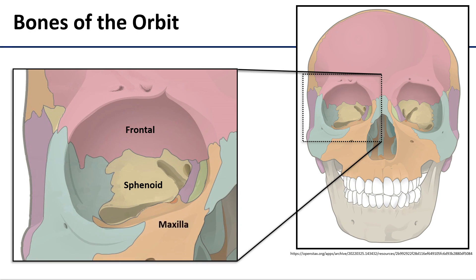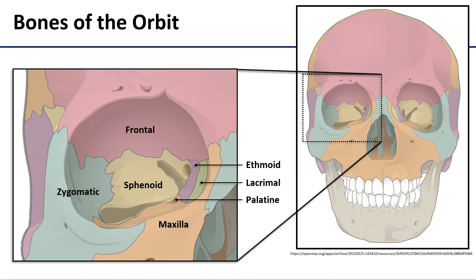The medial wall is formed primarily by the maxilla, but also gets contributions from the lacrimal bone, the ethmoid bone, and a teeny tiny little bit of the palatine bone. Inferiorly, the floor of the orbit is made up mostly by that maxilla, but also by the zygomatic bone, and a little bit of that palatine again.